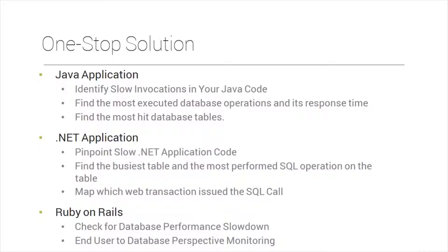You can find the most executed database tables. For .NET, you can pinpoint slow application code, identify the busiest table, the most performed SQL operations on a table, and map which web transaction issued each SQL call. For Ruby on Rails, you can check for database performance slowdowns and monitor from end user to database perspective.